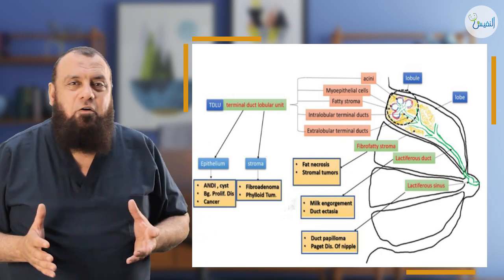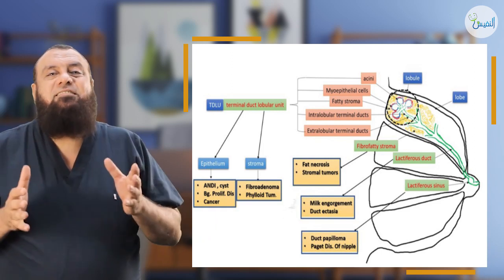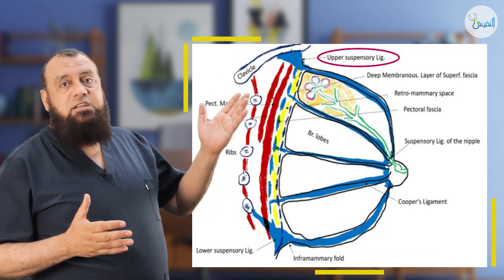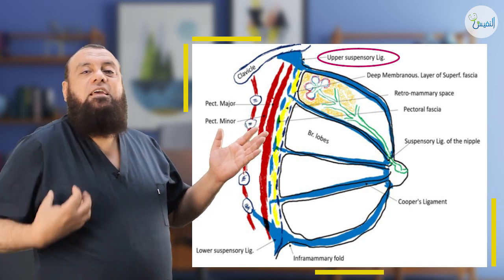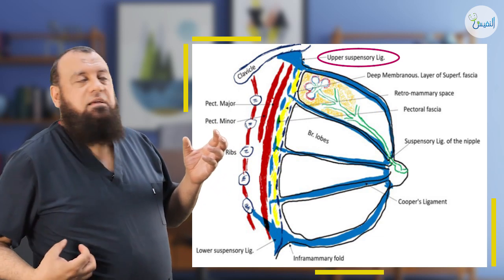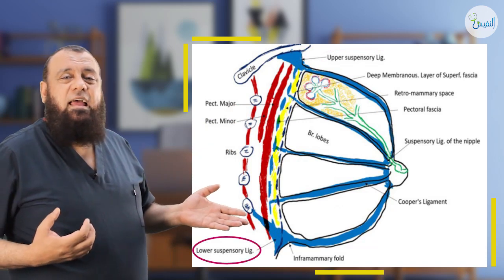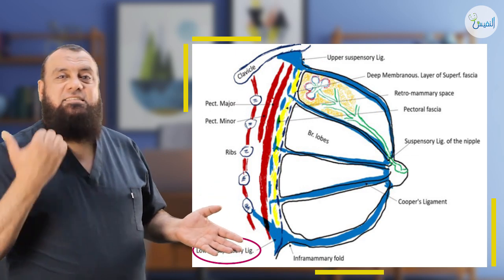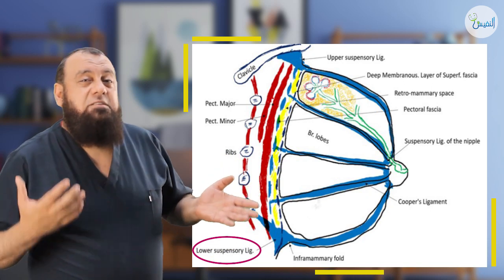Most of the diseases of the breast arise from what we call the terminal duct lobular unit, which is under control of the estrogen hormone. What about the ligamentary support of the breast? In this photo, there is what we call the upper suspensory ligament that attaches the breast to the clavicle. It is responsible for lifting the breast and preventing ptosis. Laxity of this ligament produces ptosis of the breast. And there is the inferior suspensory ligament that is responsible for folding of the inframammary sulcus.